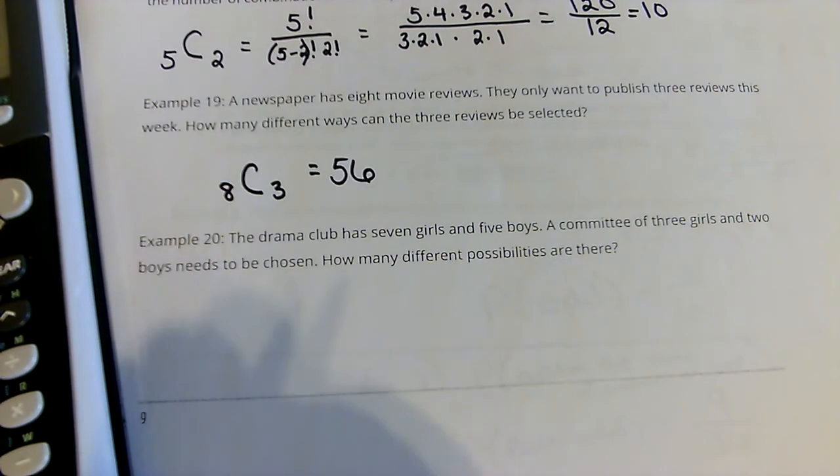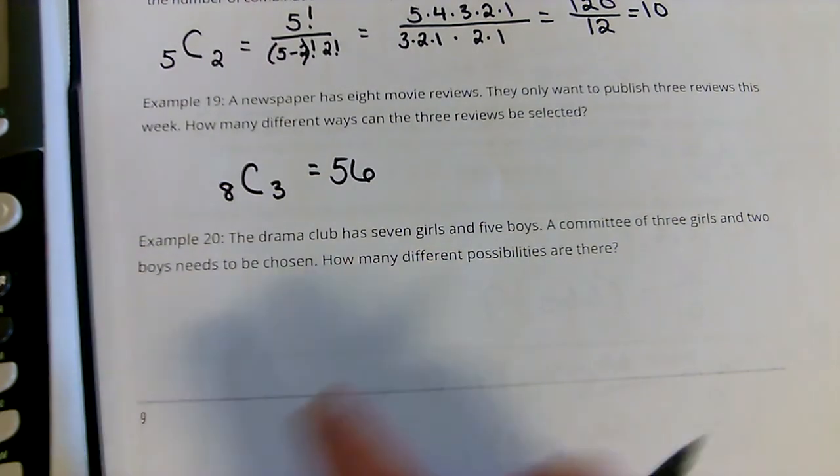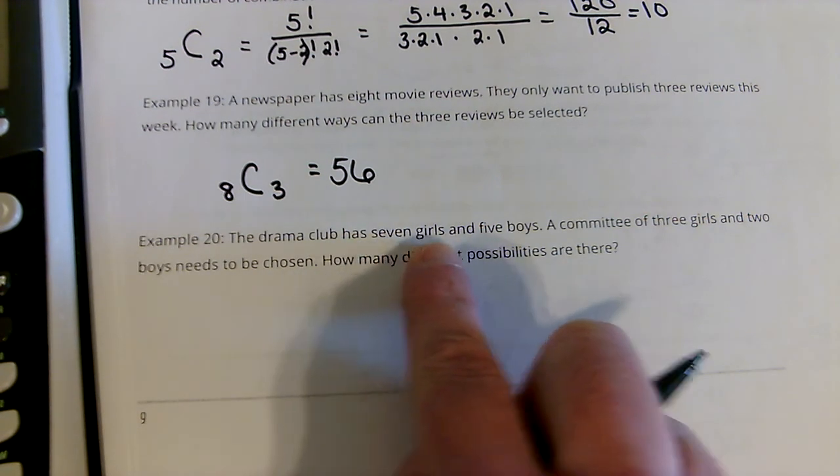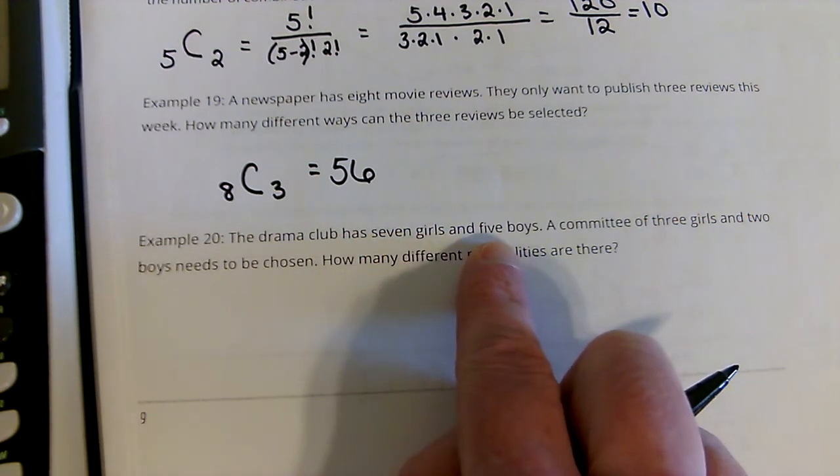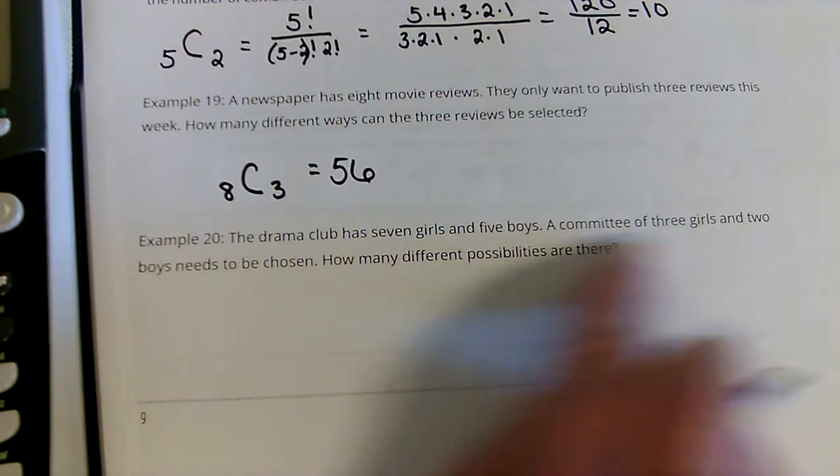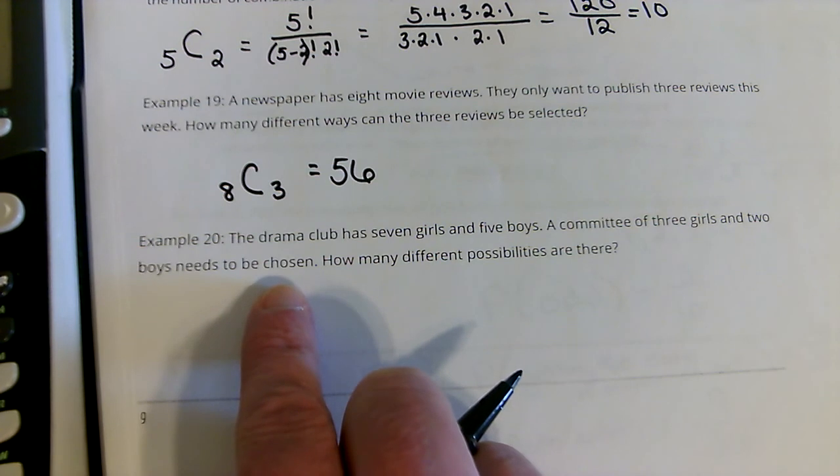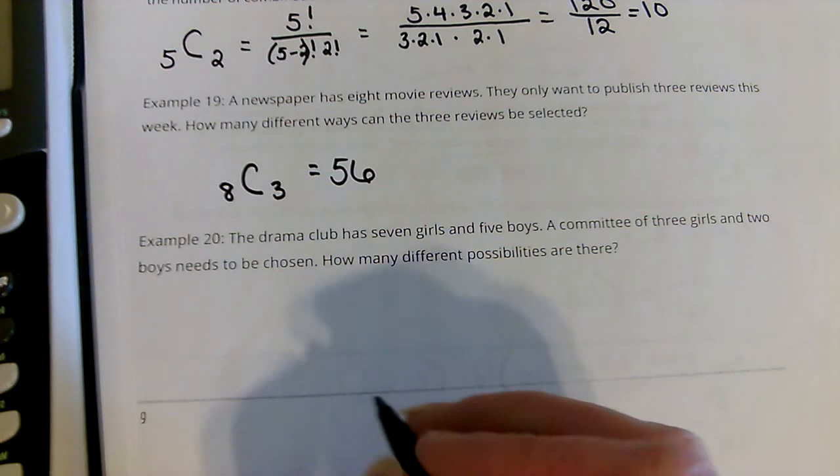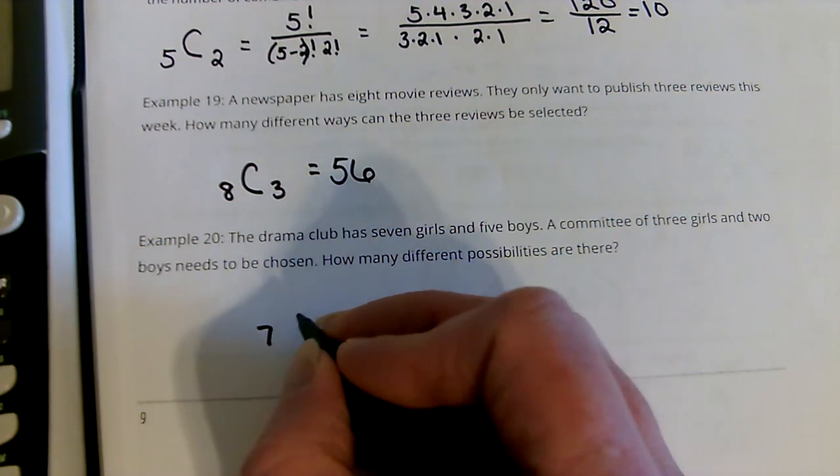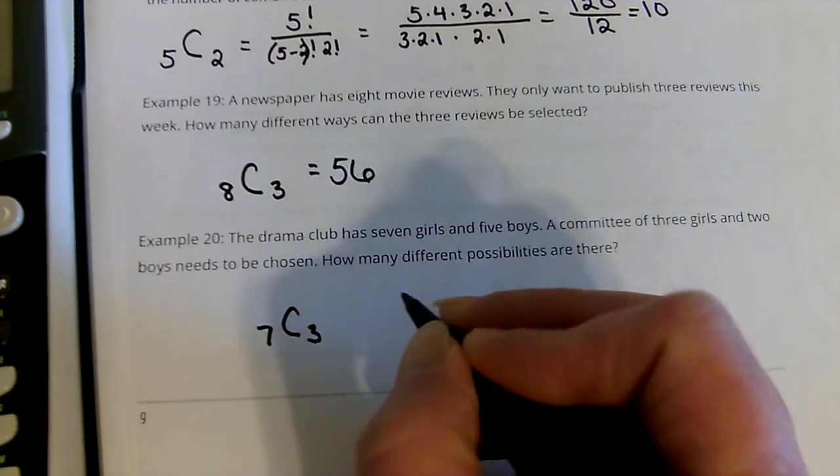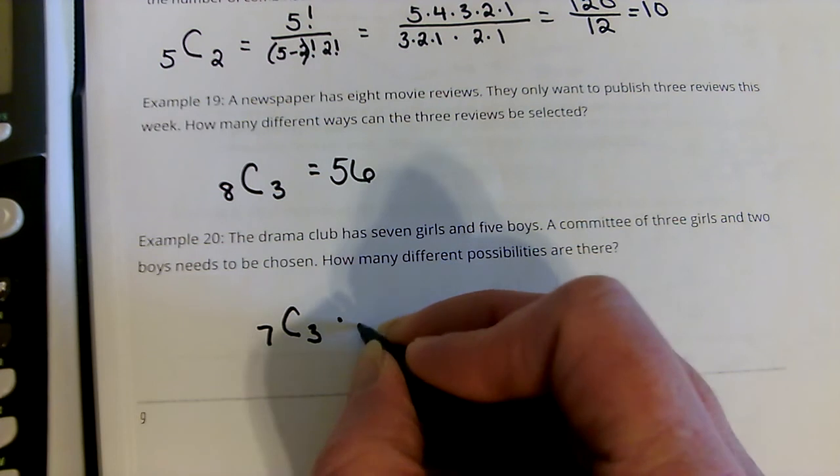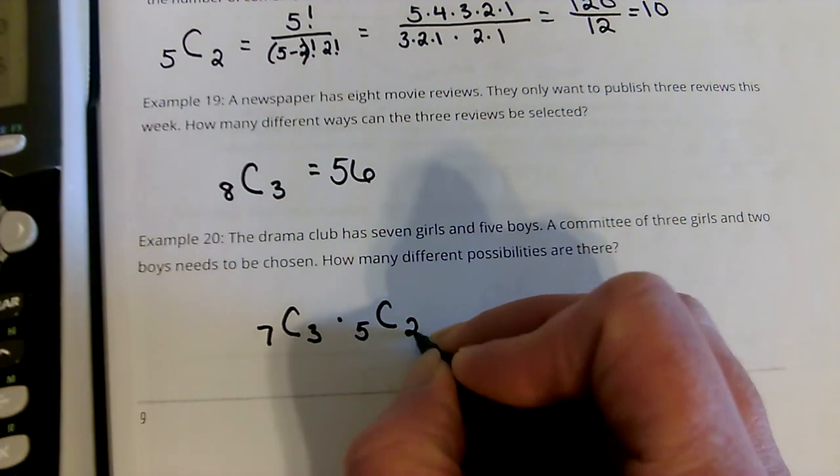Now, you're welcome to use the formula if you find the factorials fun. A drama club has 7 girls and 5 boys. A committee of 3 girls and 2 boys need to be chosen. Now, this one gets a little bit more complicated. How many different possibilities are there?